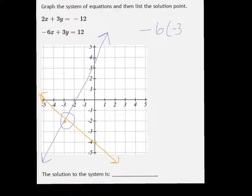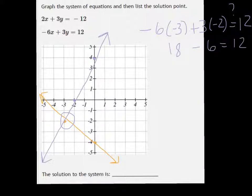If I put negative 3, negative 2 into the second equation, I know for sure it works for the first. Just to make sure this goes through, we get 18 minus 6 equals 12. 12 equals 12. So yes, the solution would be negative 3, negative 2.